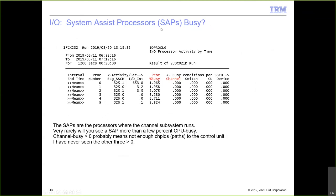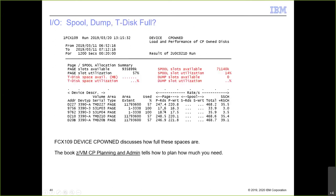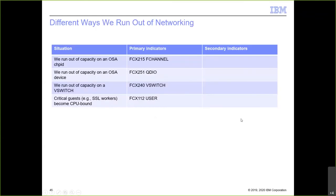System assist processors (SAPs) are hidden processors in the CPC that mostly run the channel subsystem. Report 232, the I/O proc log, shows their percent busy; these are rarely seen very high in practice. Another way I/O can fill is running out of spool space, dump space, or T-disk space. All of these are visible in FCX 109 device CPO — just look at the percent used for page slots, T-disk slots, and spool slots.